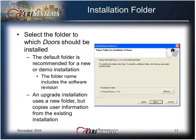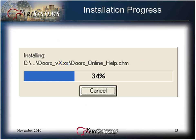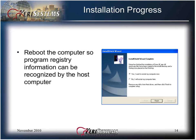Select the folder to which DOORS should be installed. The default folder is recommended for a new or demo installation. If this is an upgrade installation, it uses a new folder, but it copies the user information from the existing installation and leaves the existing folder. Once you click the Next button, you will see a progress bar appear to let you know how far along the installation is. Once the installation is complete, you must reboot the computer so the program registry information can be recognized by the host computer. Click the Finish button to reboot the computer.